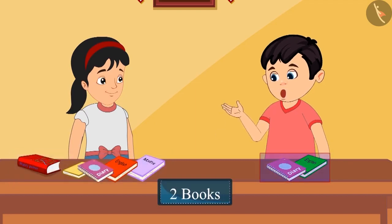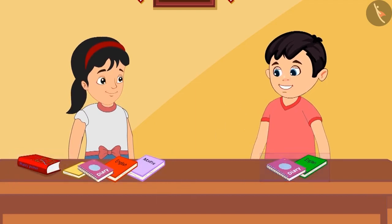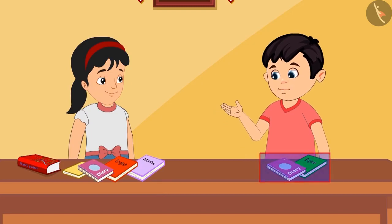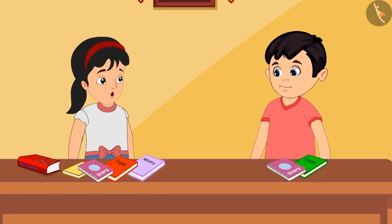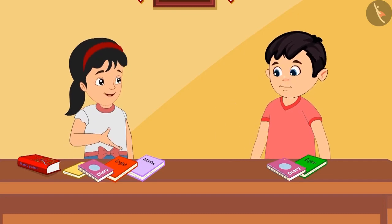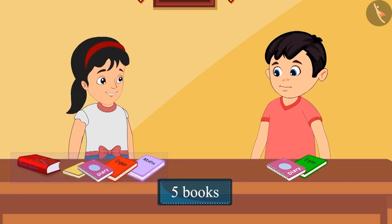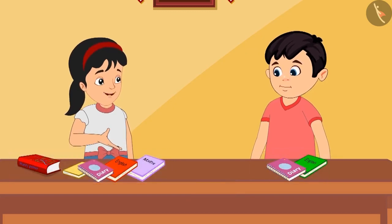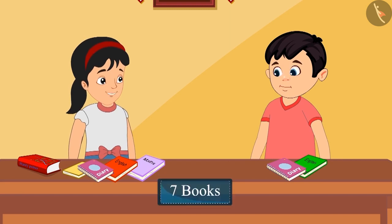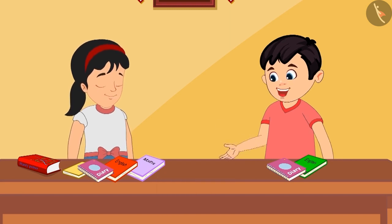I have only two books with me and I don't read them anymore. You have more books than me. Yes Chotu, but it's okay — you give as many books as you have. But how many more books do you have than me? I have five books and you have two, so I have seven more books than you.